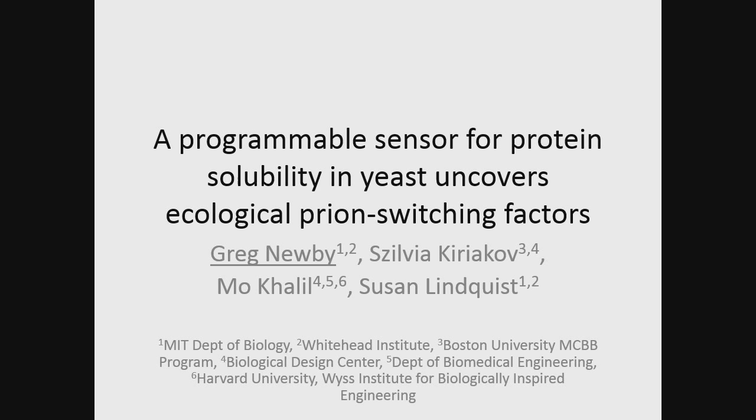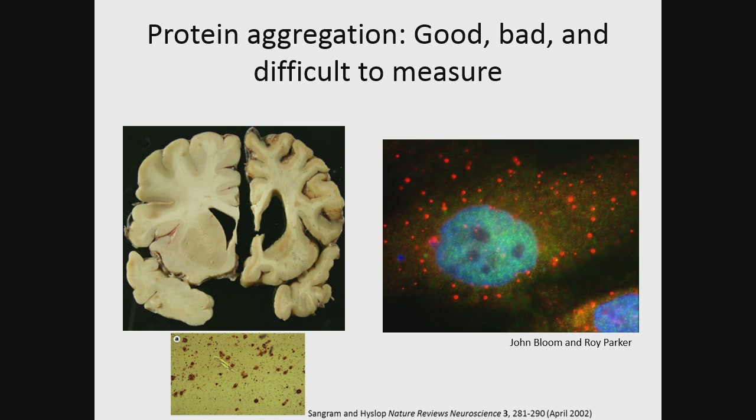We're coming to understand that protein aggregation is, in a sense, a double-edged sword. On the one hand, it can be the cause of many devastating diseases. For instance, Alzheimer's disease — here I've shown on the left a normal brain juxtaposed to the brain of a patient who died of Alzheimer's disease. The neurons in the brain are dying because of the aggregation of A-beta, which we can see as plaques below.